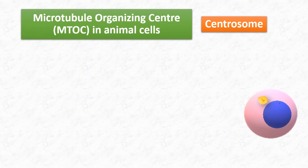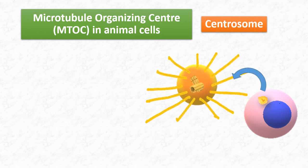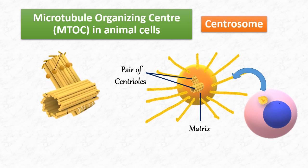If we zoom in, we will find that this centrosome consists of an amorphous matrix of fibrous proteins. And this matrix is organized by a pair of centrioles. Centrioles are cylindrical structures present or embedded in the centrosome. Centrioles are also made up of microtubules. Each centriole is composed of nine sets of triplet microtubules, arranged in a ring. These two centrioles are arranged at right angles to each other.